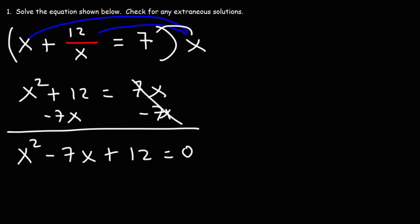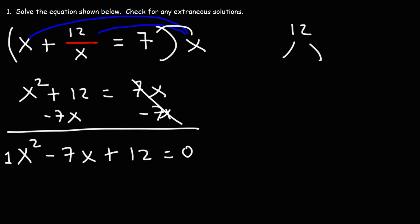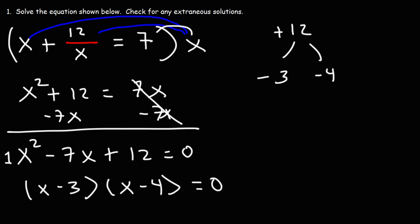What we have here is a trinomial with a leading coefficient of 1. To factor it, we need to find two numbers that multiply to 12 but add to the middle coefficient, negative 7. That's negative 3 and negative 4: negative 3 plus negative 4 equals negative 7, and negative 3 times negative 4 equals positive 12. So we can write this as (x minus 3)(x minus 4) equals 0. Using the zero product property, we set each factor equal to 0.